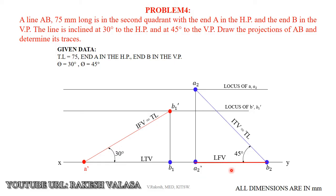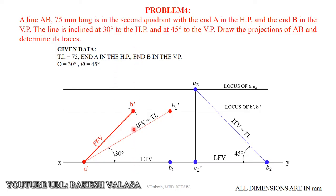Now take your engineering compass, measure the length A2 dash B2, and with A dash as center draw an arc on the locus of B1 dash to get point B dash. This is the final front view point. Now join A dash and B dash to get the final front view for the given problem.